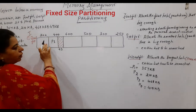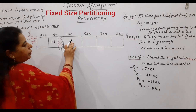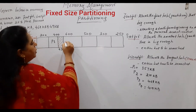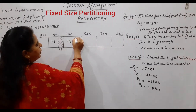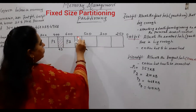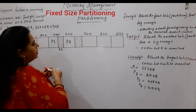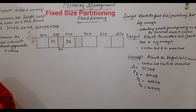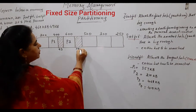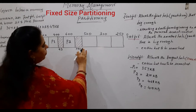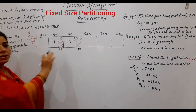When you subtract 357 from 400 you get 43 KB leftover. Next, P2 is 210 KB. You cannot place it in the previous partition. Using first fit, you place P2 in the next available partition of 600 KB, since that is the first partition that can hold it. The process size is 210, so there is a leftover space of 600 minus 210 equals 390 KB — a very large leftover. All sizes are in KB.